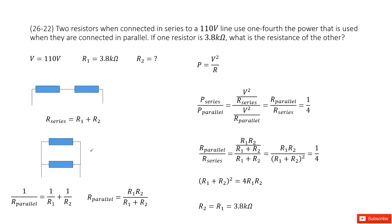In these two cases — series connection or parallel connection — the voltage V is constant, since this is a power supply of 110 volts. So the only difference is the resistance, the equivalent resistance for each connection. For the series connection, the equivalent resistance is R1 plus R2.